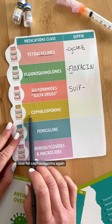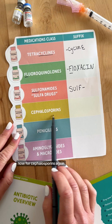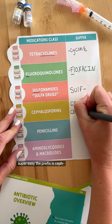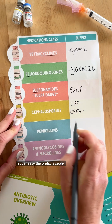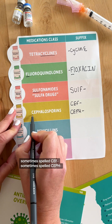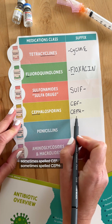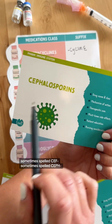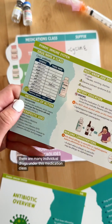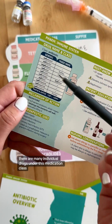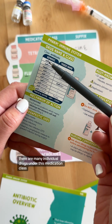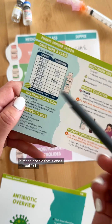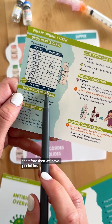Now for cephalosporins — again, super easy. The prefix is ceph-, sometimes spelled C-E-F, sometimes spelled C-E-P-H. There are many individual drugs under this medication class, but don't panic. That's what the prefix is there for.